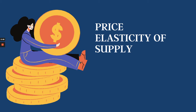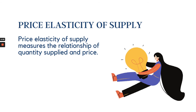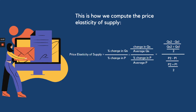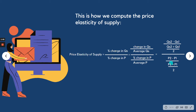In this topic we will study how to measure the relationship of quantity supplied and price when the price changes. In the law of supply, if the price increases, the quantity supplied also increases, but there are other factors that can also change the supply. Mathematically, the price elasticity of supply is computed as the percentage change in quantity supplied over the percentage change in price — that is Q2 minus Q1 over the average quantity supplied, over P2 minus P1 over the average price.